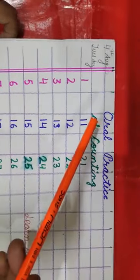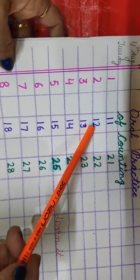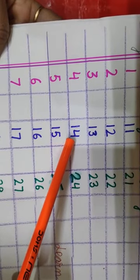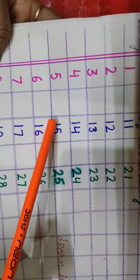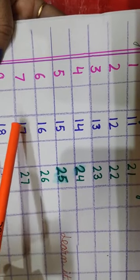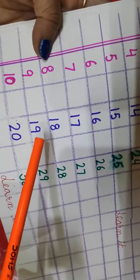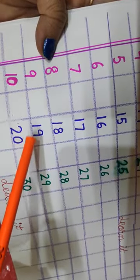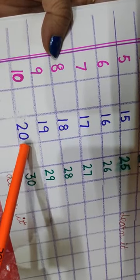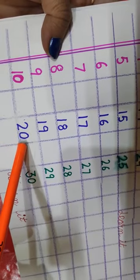Now second line. 1, 1, 11. 1, 2, 12. 1, 3, 13. 1, 4, 14. 1, 5, 15. 1, 6, 16. 1, 7, 17. 1, 8, 18. 1, 9, 19. 2, 0. What is 2, 0? 2, 0, 20.